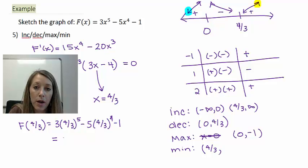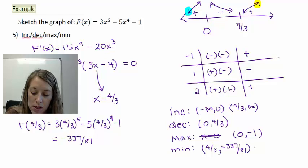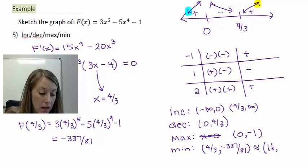In fraction format, when I used my calculator, that gave me -337/81. So that is my official answer, but we want to use this for graphing, so we might want the approximate answer as well. So that is 1 and 1/3, or 1.3 repeating, and then approximately -4.16. So that is where my minimum value is.